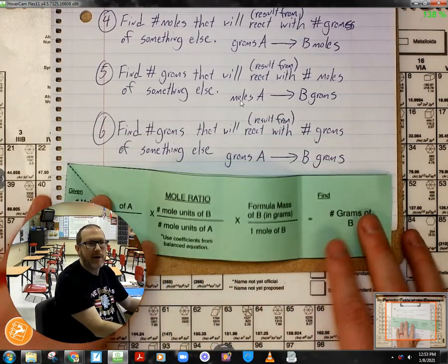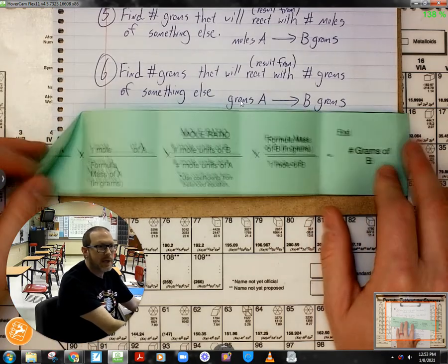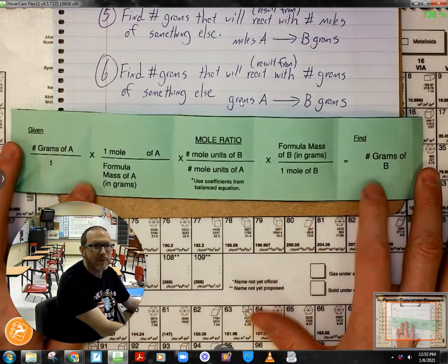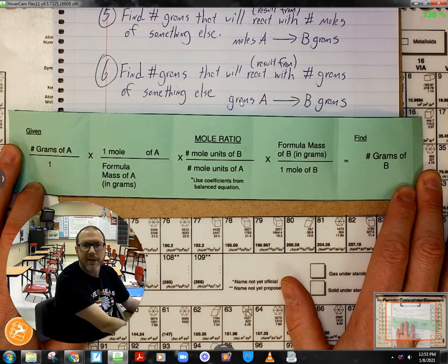And of course, if I'm going from mass of one substance and finding the mass of the other substance, then I simply use the entire unfolded football and set up my conversions to look like that.